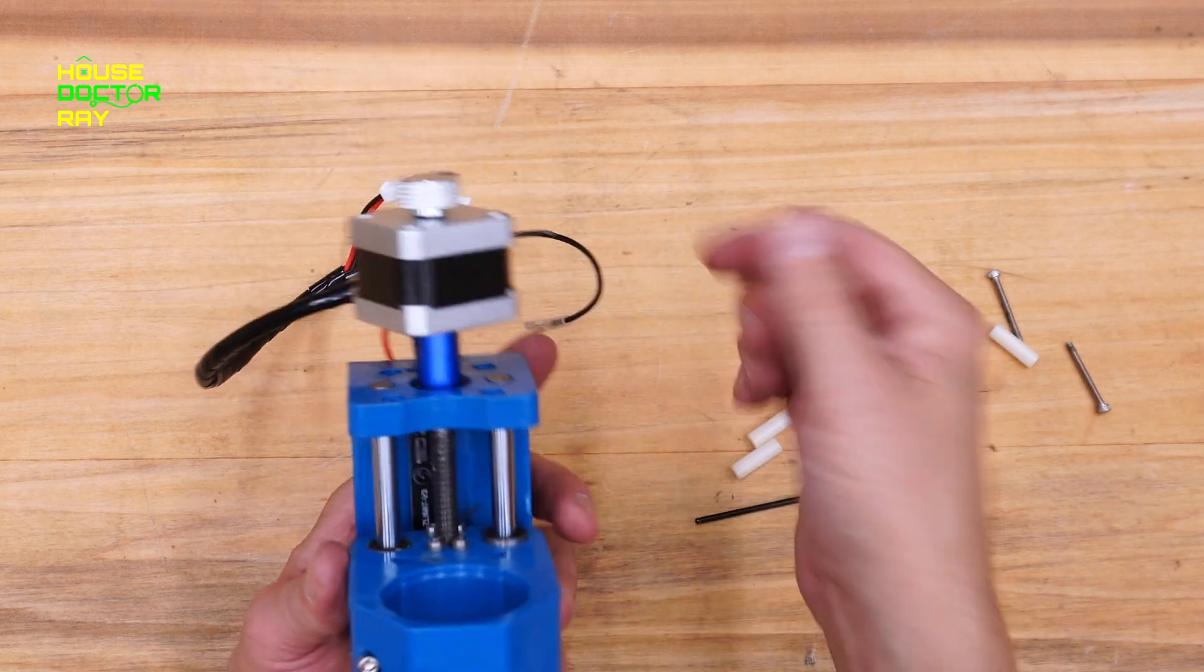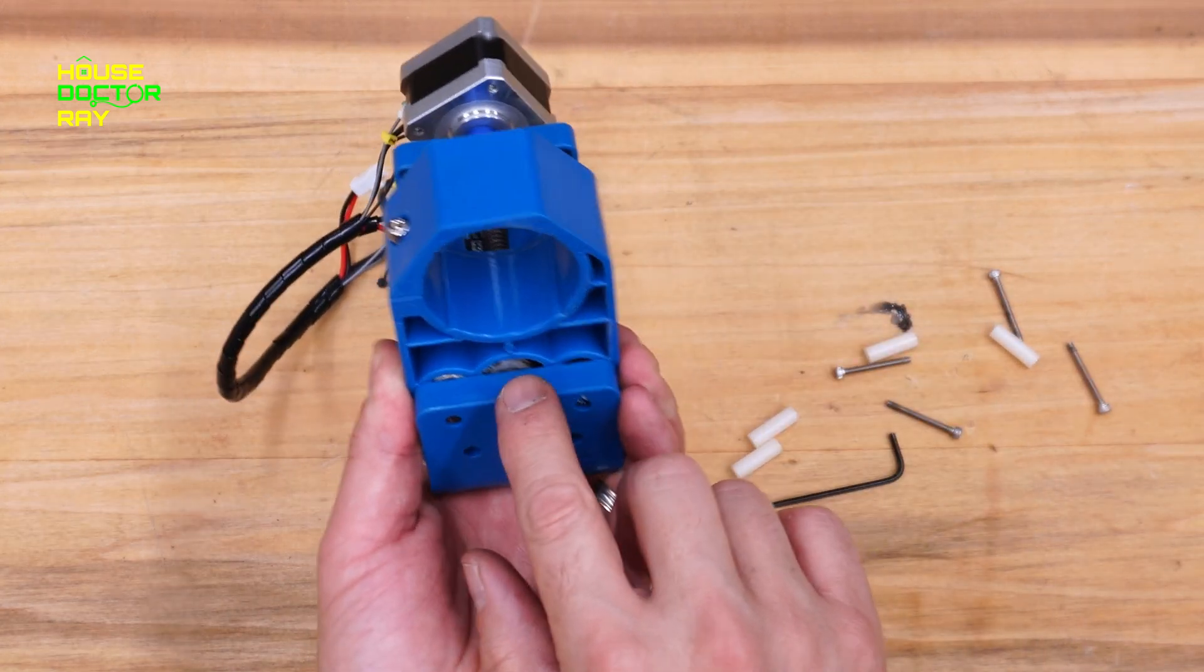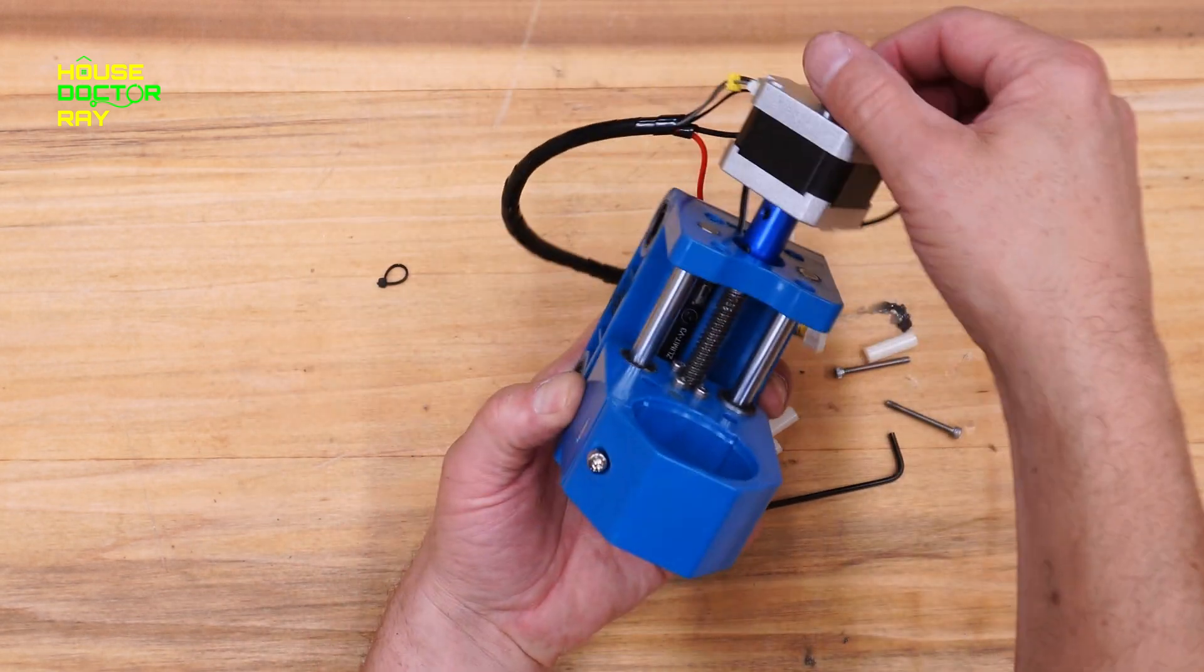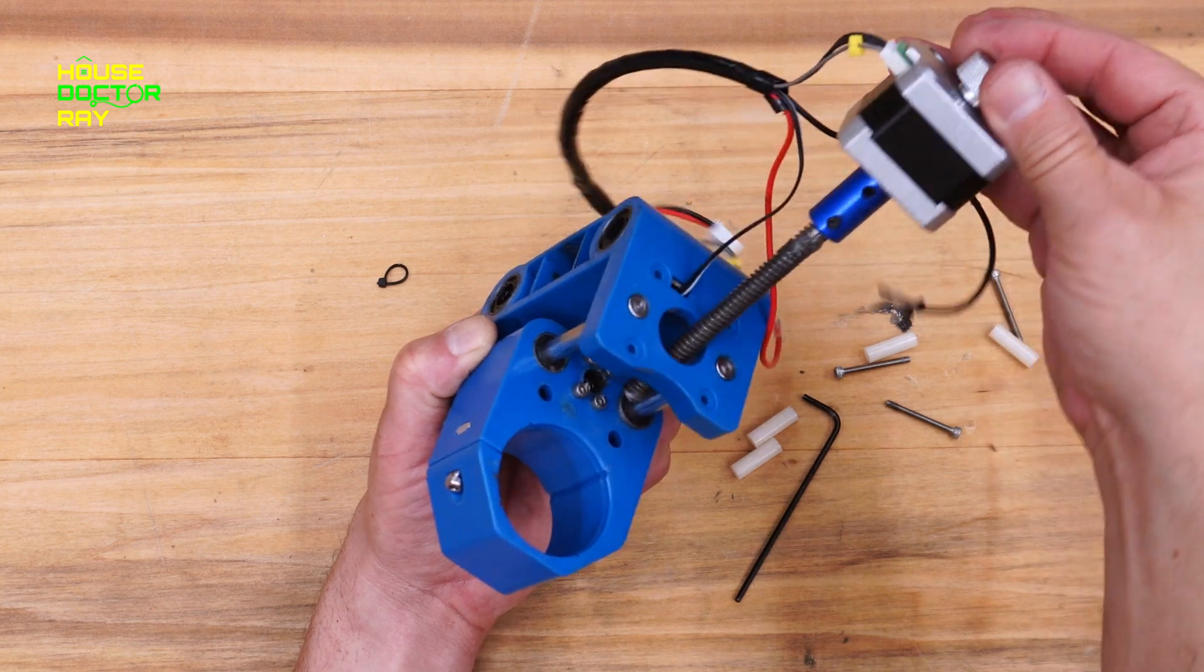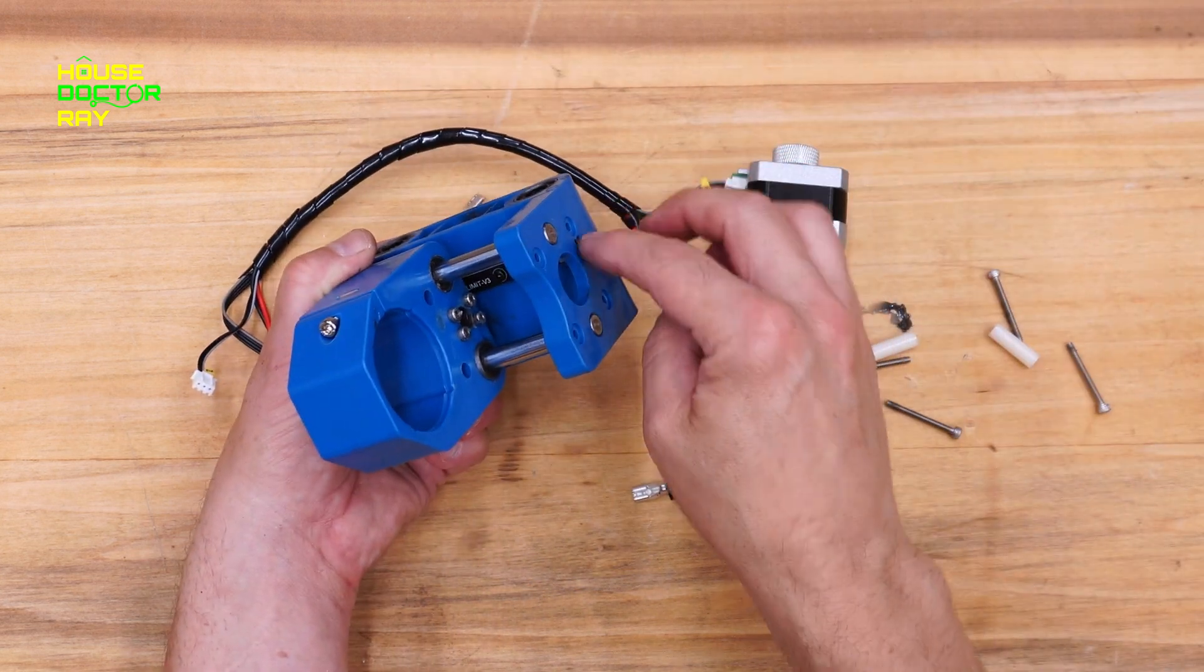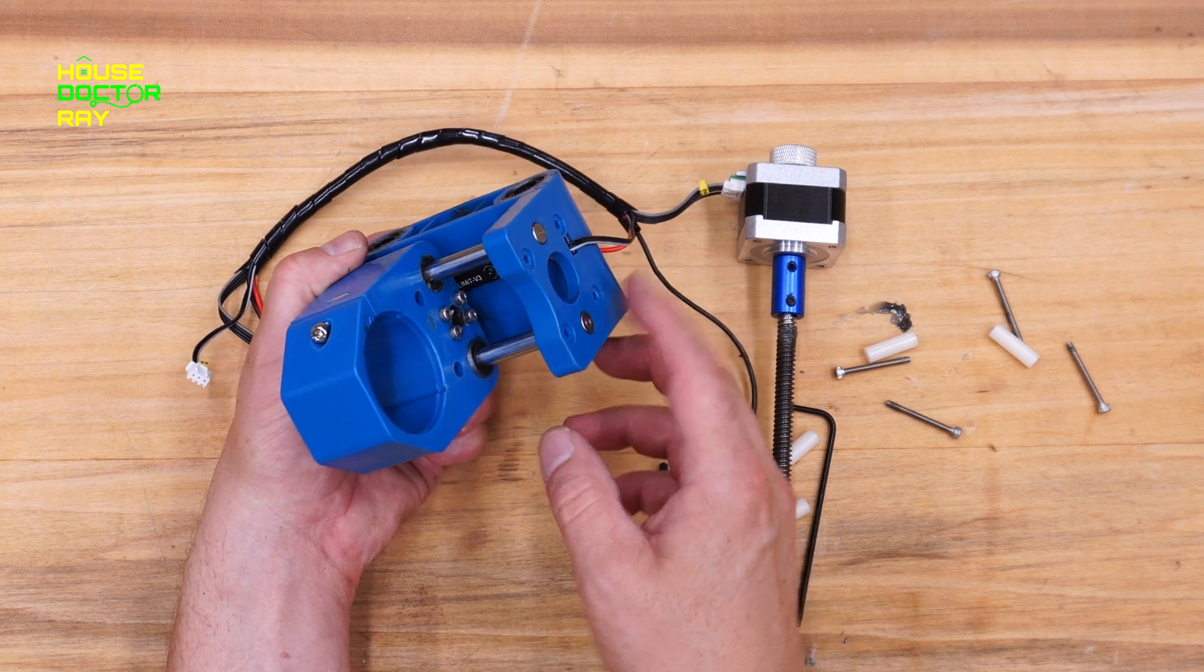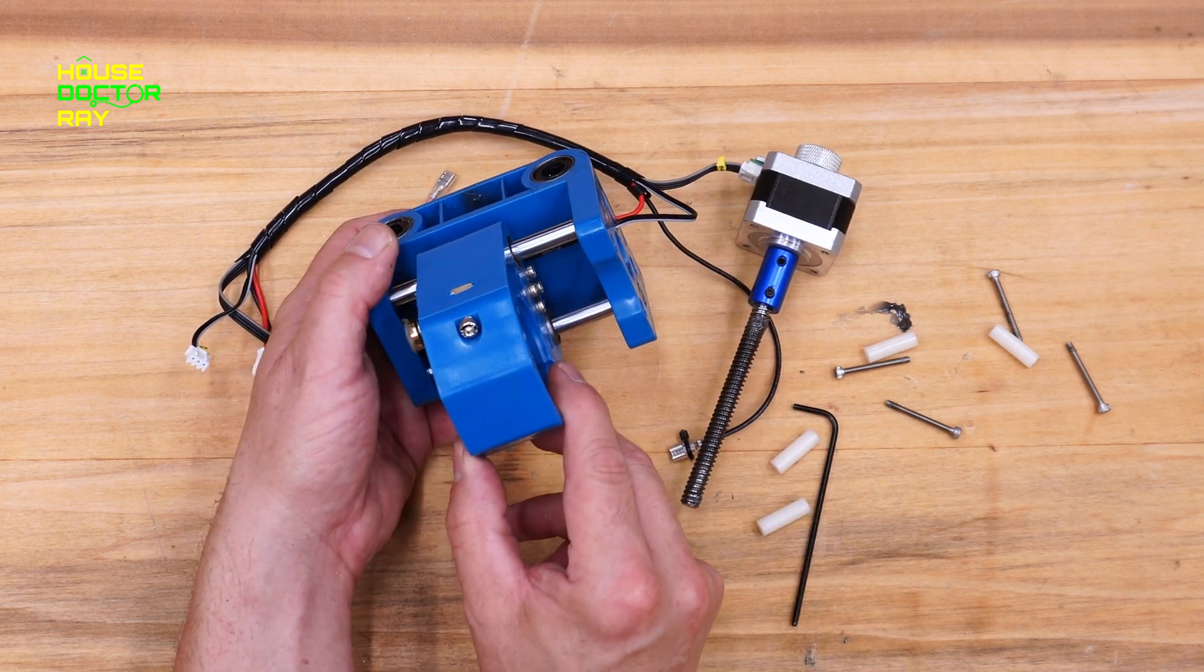Now I just have to unscrew it and at least this time the other nut will be caught here. I don't have to worry about it flying across the shop. I do have to worry about the wires though for my limit switches and I'm not going to try taking that apart.